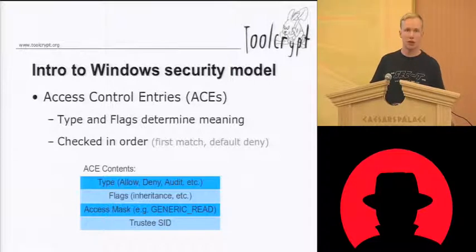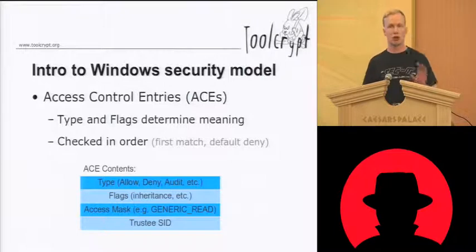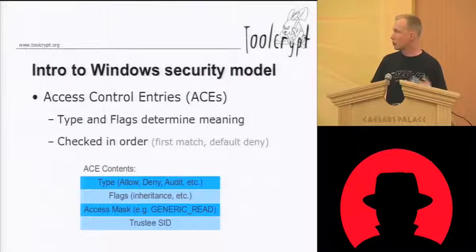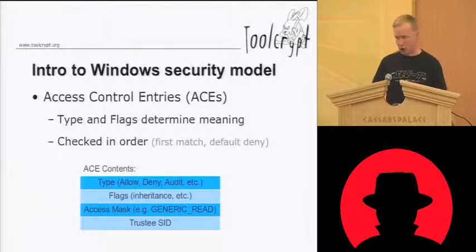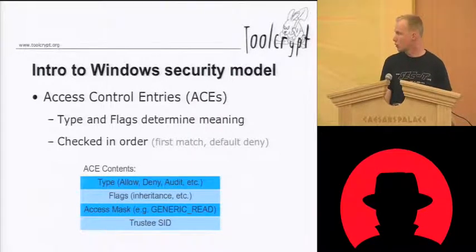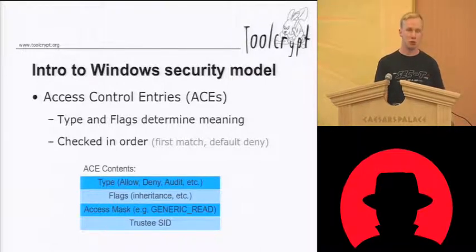And there's an access mask. The access mask is basically what you match — the access that's being asked from a system user to a specific resource — to the access control list that grants the user the access. And of course, there's a SID that identifies the trustee or the user that's granted this access. So the access mask can, for example, be read access only, and that would set a number of bits in this bit field.